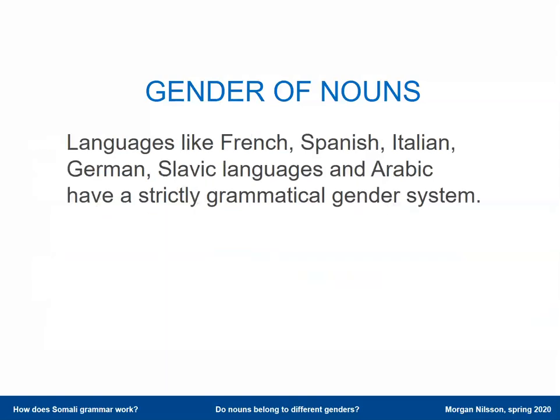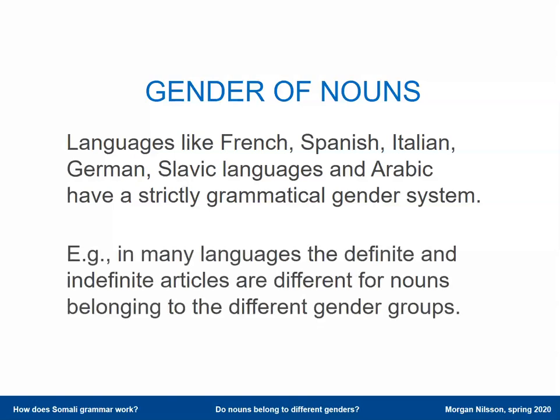Whereas languages like French, Spanish, Italian, German, all the Slavic languages, Arabic — they have this very grammatical gender system, very different from the English system with only pronouns. And in many of these languages, you will be able to tell the gender of the noun from the article — from the definite article, maybe also from the indefinite article — because there are different articles for the different genders.